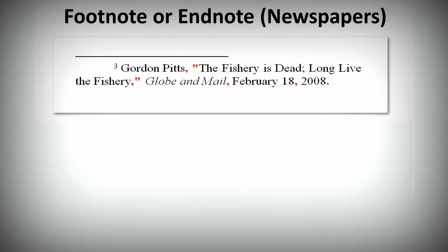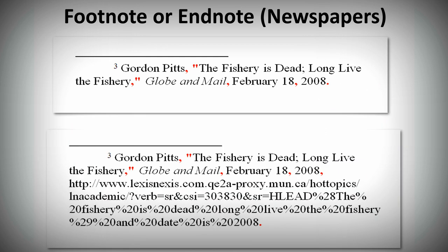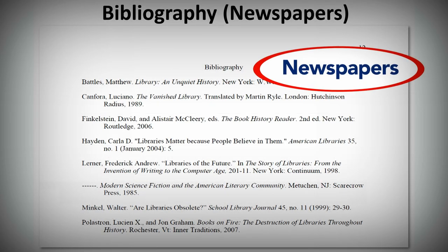Newspapers are cited in a similar way as magazines, with one difference. Chicago style suggests not including page numbers at all for newspaper article citations, even in your note. For online newspaper articles, include the URL or DOI at the end of the citation, after the date. For newspaper articles, unless the specific article is critical to your argument or cited multiple times, you don't include it in your bibliography. Newspaper articles are rarely included in Chicago-style bibliographies.